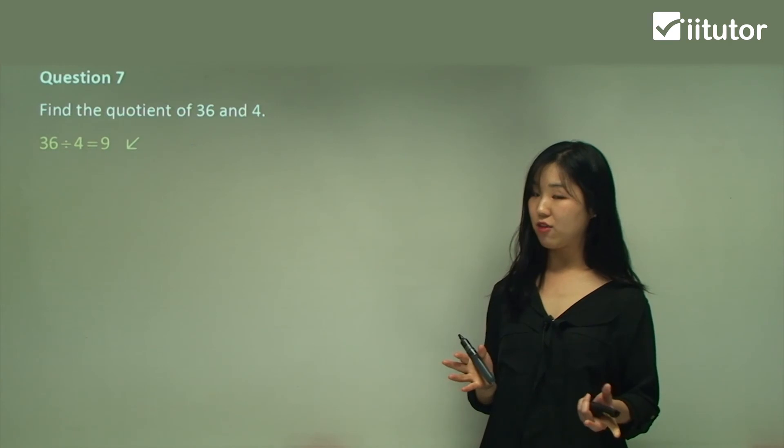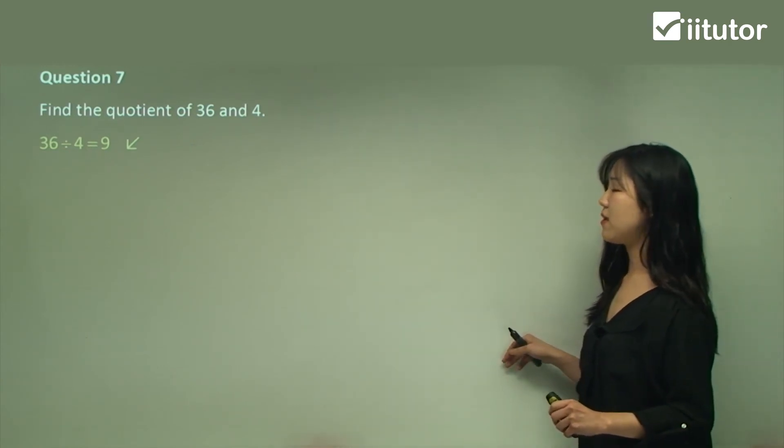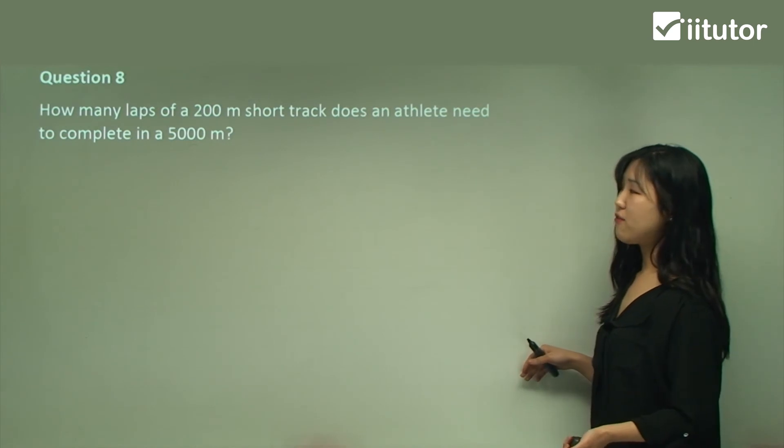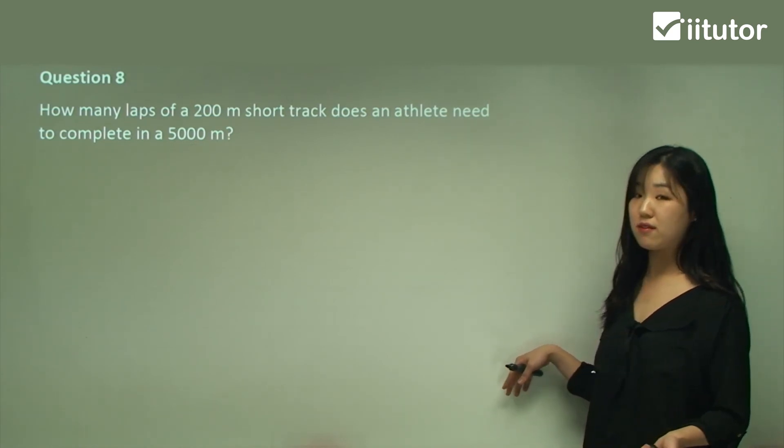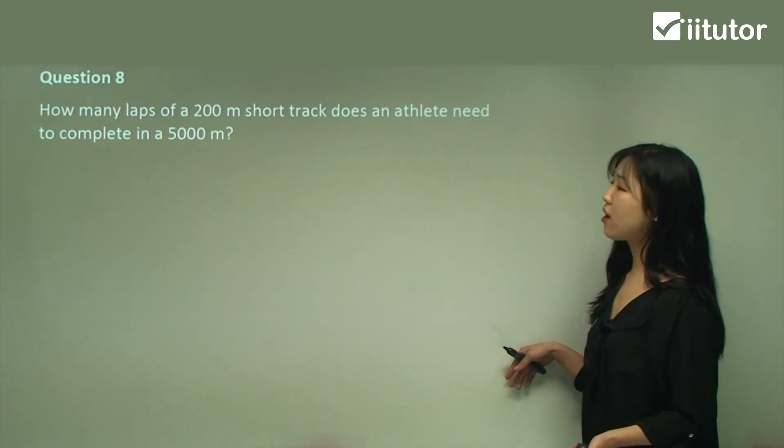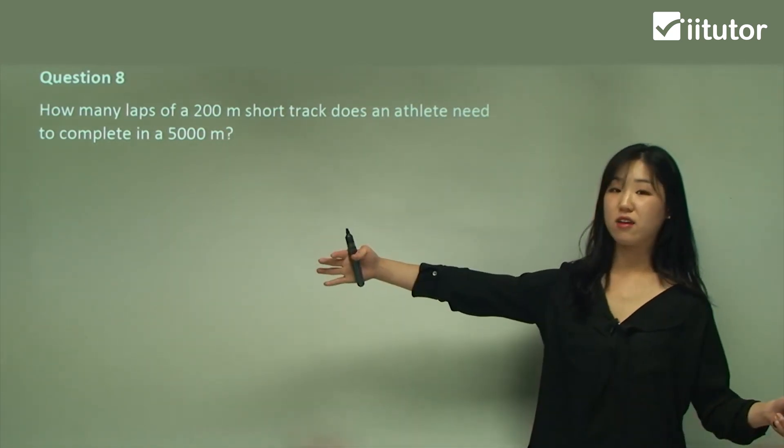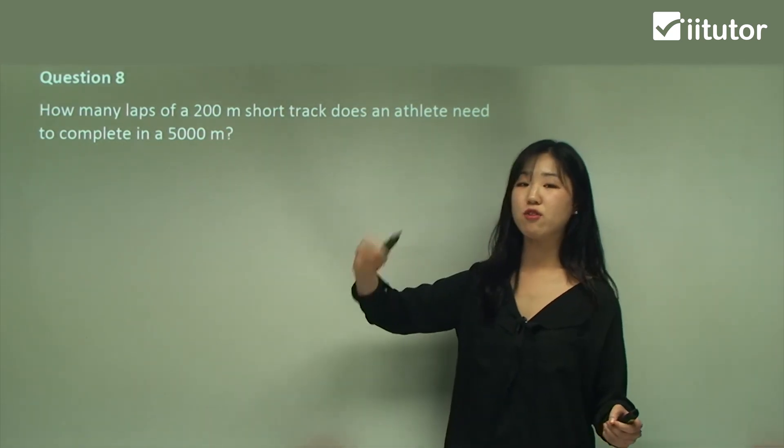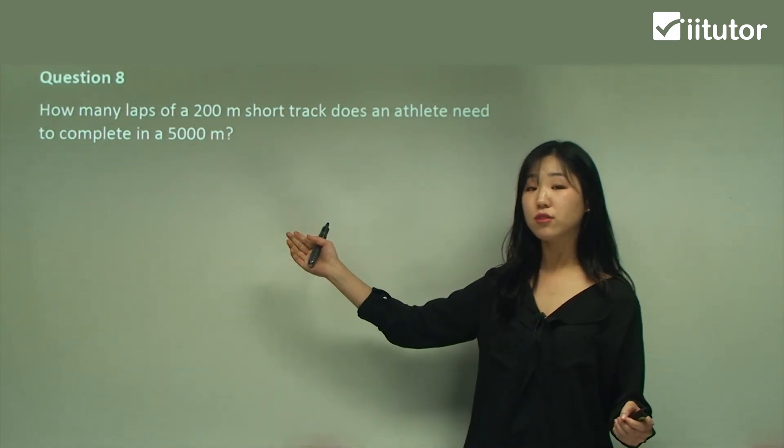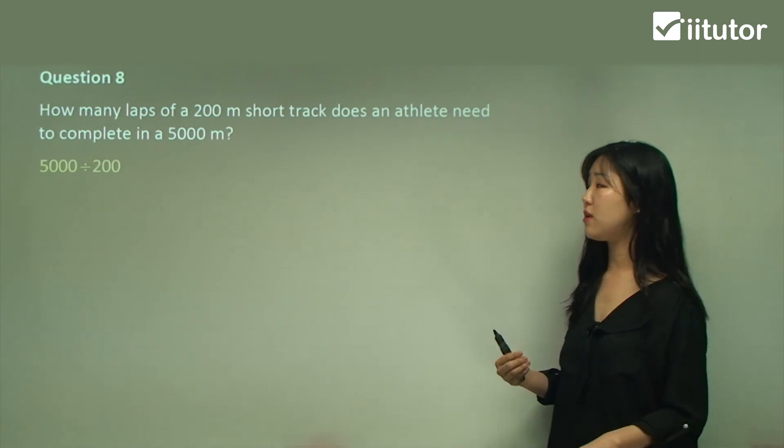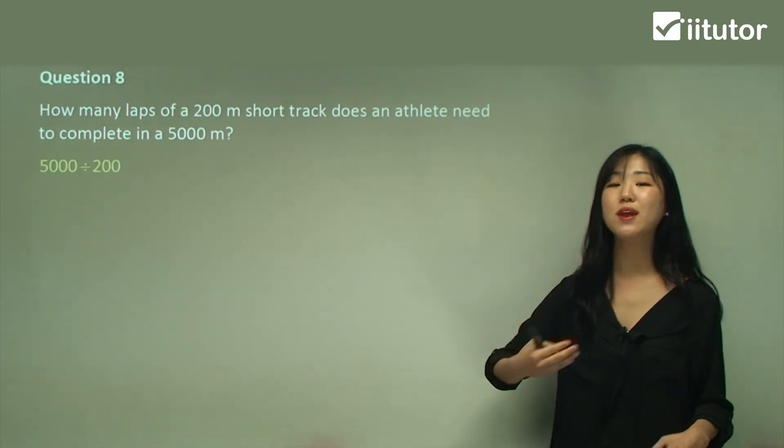Question 8: how many laps of a 200 meter short track does an athlete need to complete in a 5000 meter one? Okay, so we have a 5000 meter track, but we want to know how many 200 meters are within that. So we need to find the quotient, don't we? So we need to divide it because I want to know how many lots of 200s are within 5000.